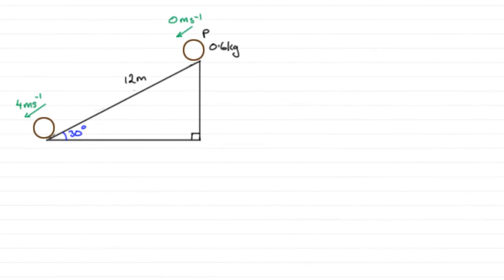Okay, so what I've done for this question is just started to draw a sketch of what we're given. We're given that we have a particle P of mass 0.6 kilograms, and it's released from rest and slides down a line of greatest slope on a rough plane. The plane is inclined at 30 degrees to the horizontal.